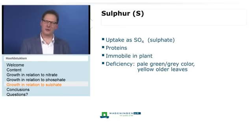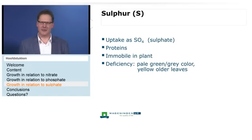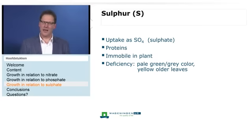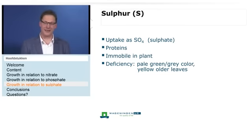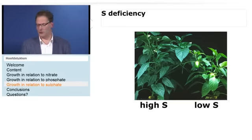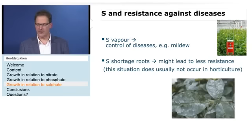Some general remarks about sulfur: sulfur is taken up by plants as SO4. It's used in proteins, and unlike nitrogen or phosphate, it is immobile in the plant — once it's in an old leaf, it stays there and will not move to younger leaves. If there is not sufficient sulfate, the plant color will change: pale green, gray, or a bit yellow. Looking at sweet pepper: high sulfur supply on the left versus low supply on the right clearly shows growth reduction and color changes.